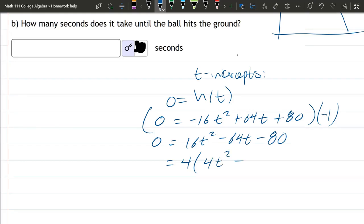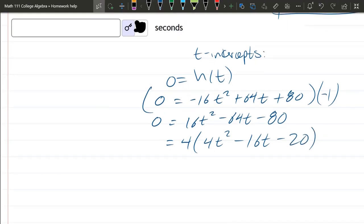64 divided by 2 is 32 divided by 2 is 16t. 80 divided by 4 is 20. Looks like we can factor another 4 out of here. T squared minus 4t minus 5.